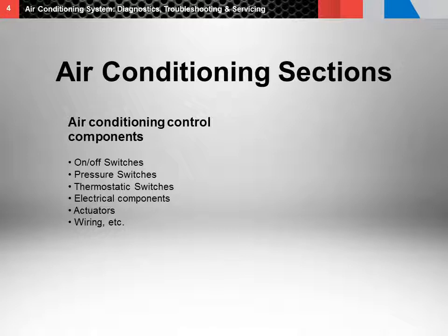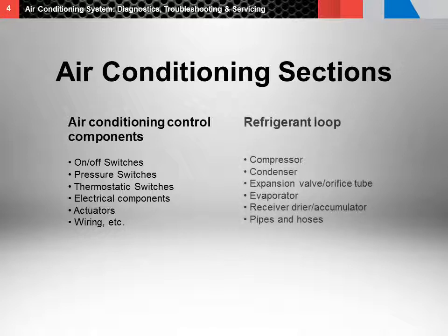The other section, the refrigerant loop, consists of the compressor, condenser, expansion valve orifice tube, evaporator, receiver dryer accumulator, pipes, and hoses.